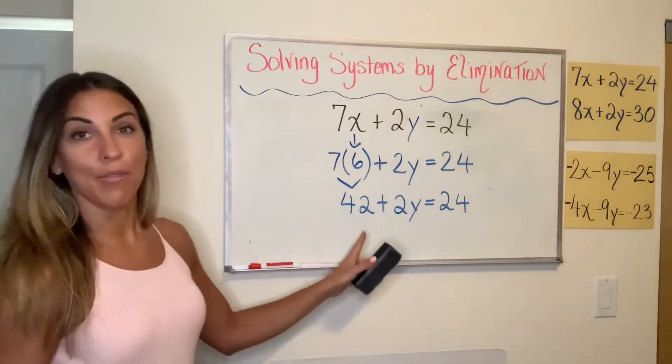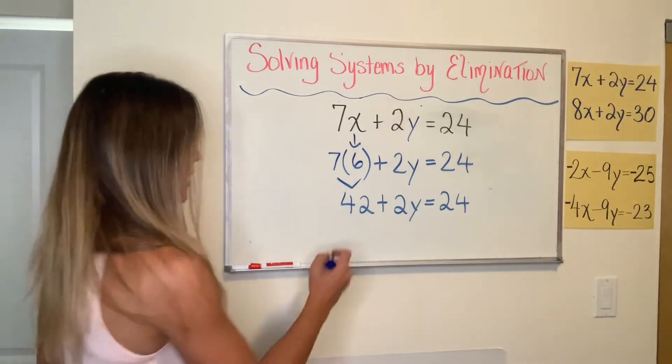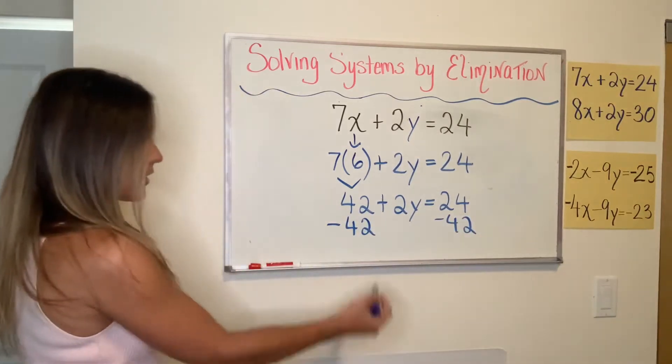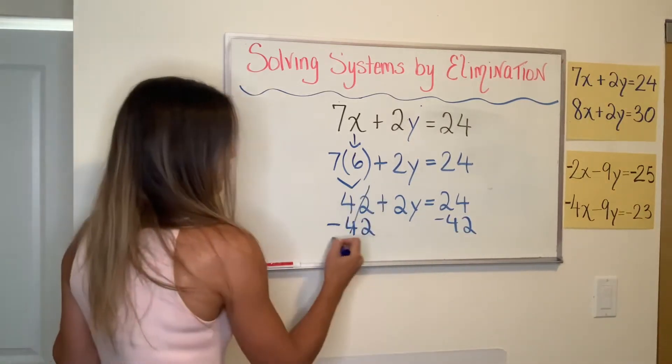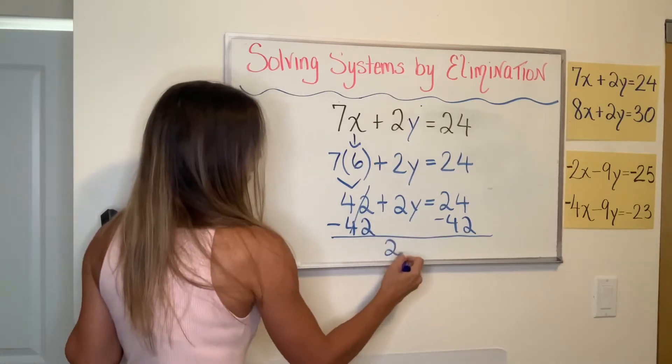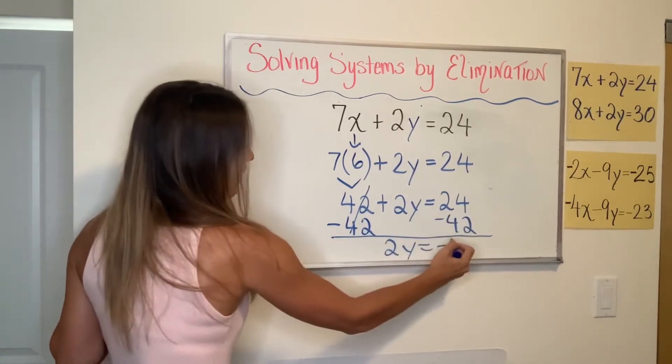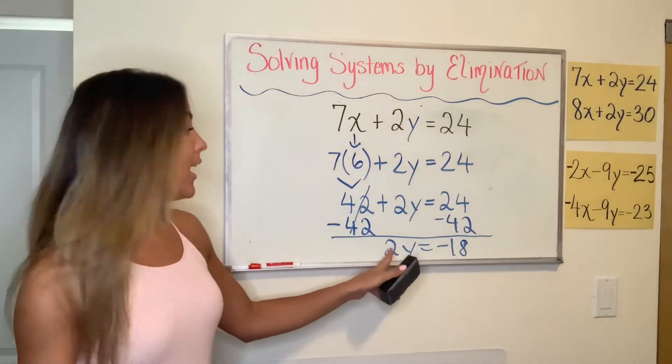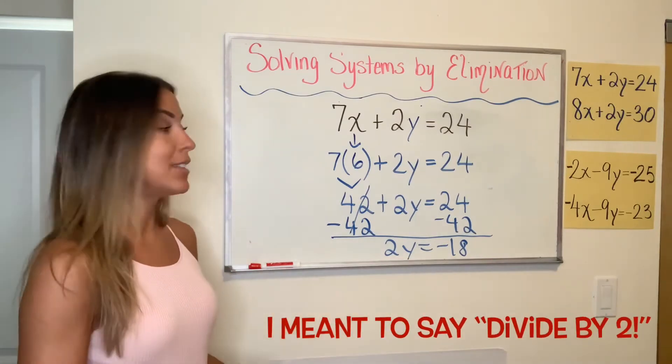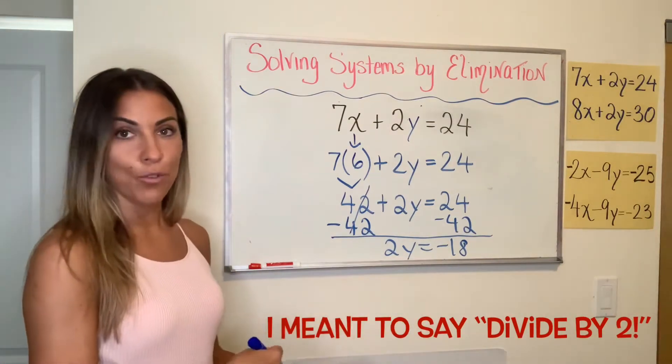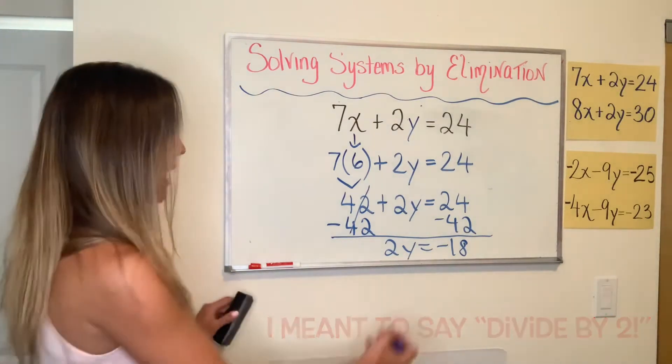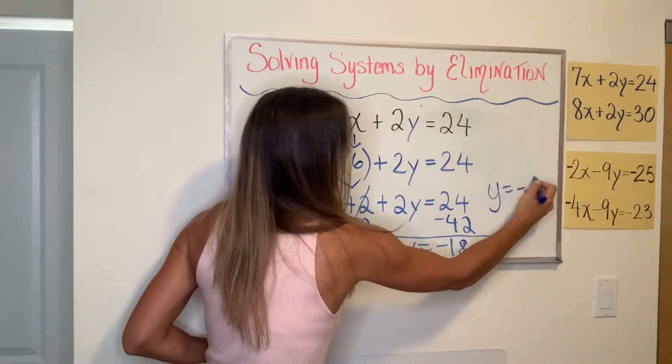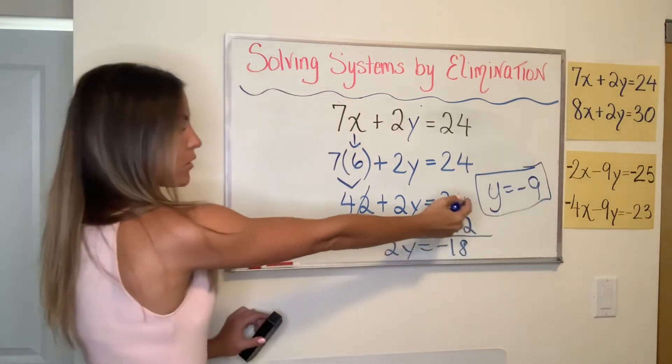Now I have a two-step equation. I like to get rid of addition or subtraction first. So I'm going to go minus 42 on both sides. On the left side, this is going to cancel out and I'll be left with 2Y equals negative 18. Now I have a one-step equation. I want to get rid of that two. It's being multiplied by Y, so I'm going to do the opposite, which is to divide by two. Divide by two gives me Y equals negative nine. So there's the Y value of my solution.